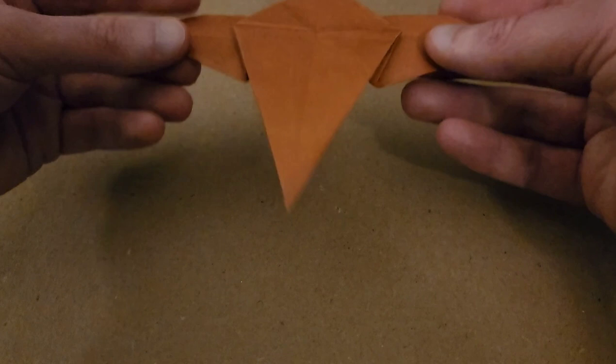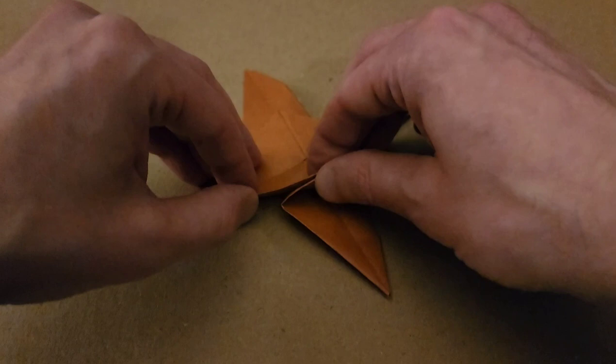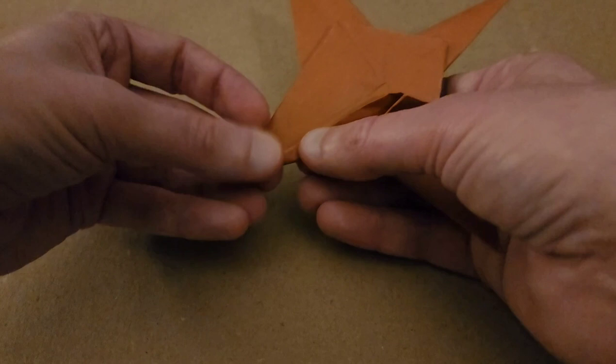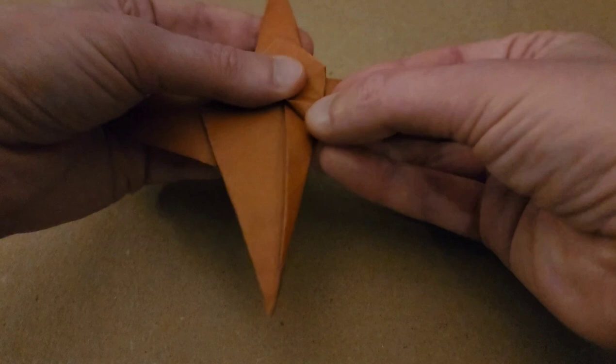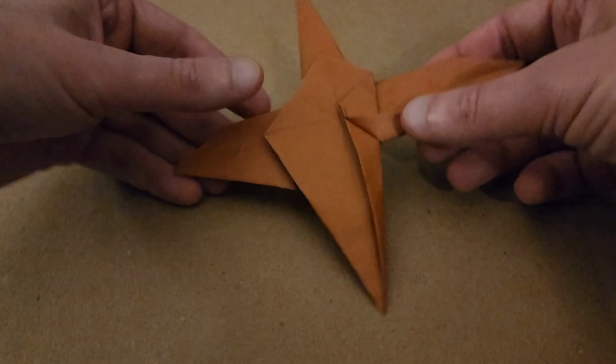So, then from here, turn your piece over. And we're going to do the same thing with this edge and this edge to the center. This one works a lot easier than the one that we just did. So, again, to the center. Get those creases. And see, this side wants to work with us a little bit better than the last side. That is okay, though. There we go.